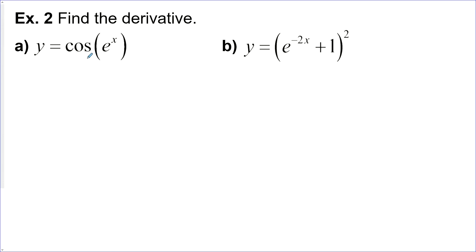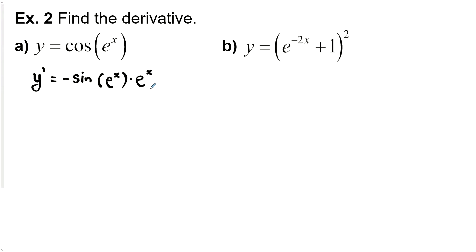Let's find the derivative of these functions. y prime would be equal to the derivative of cosine, which is negative sine — leave the inside alone. Then the derivative of e to the x is e to the x. So we can just reorder it, and that would be the derivative.